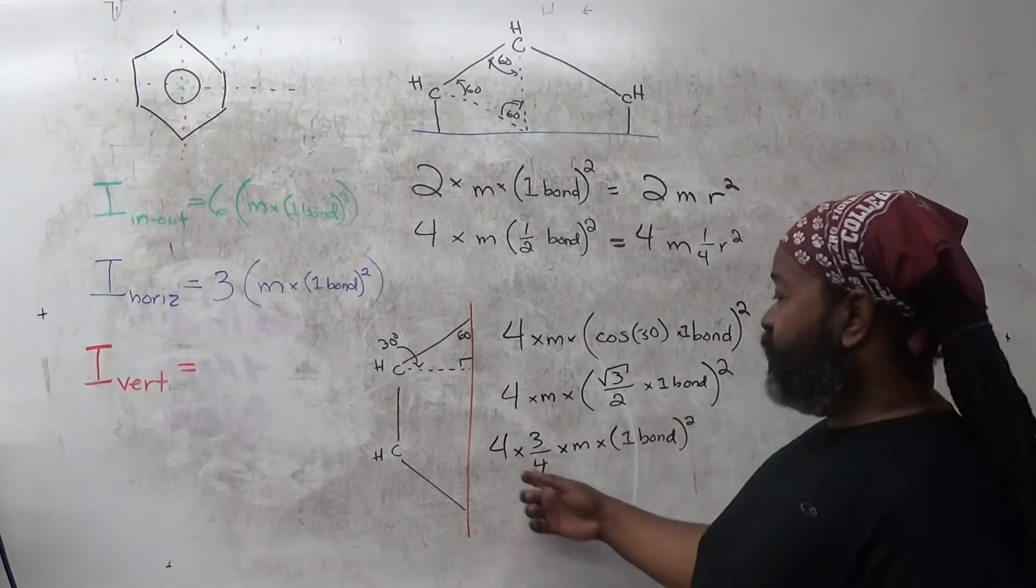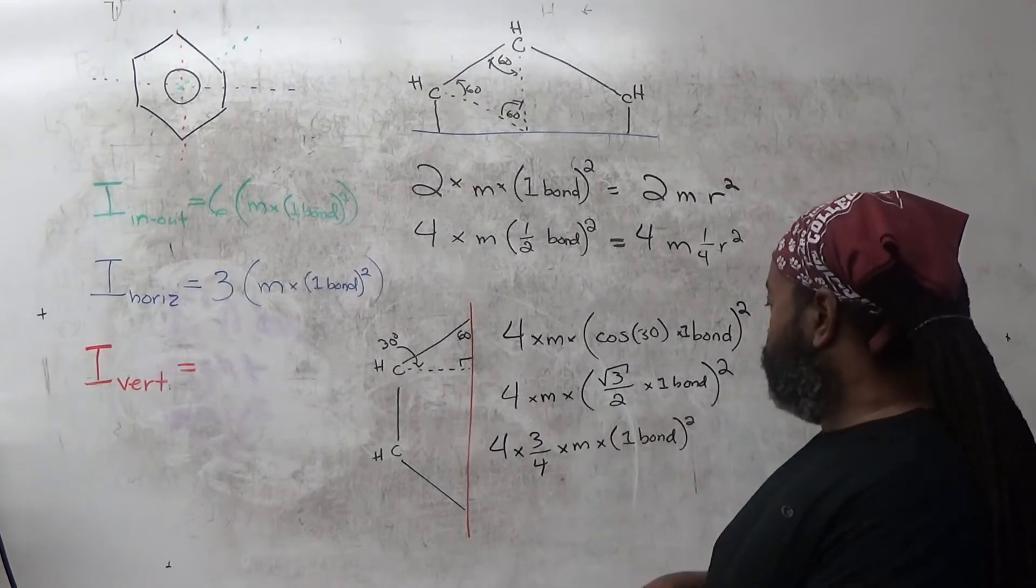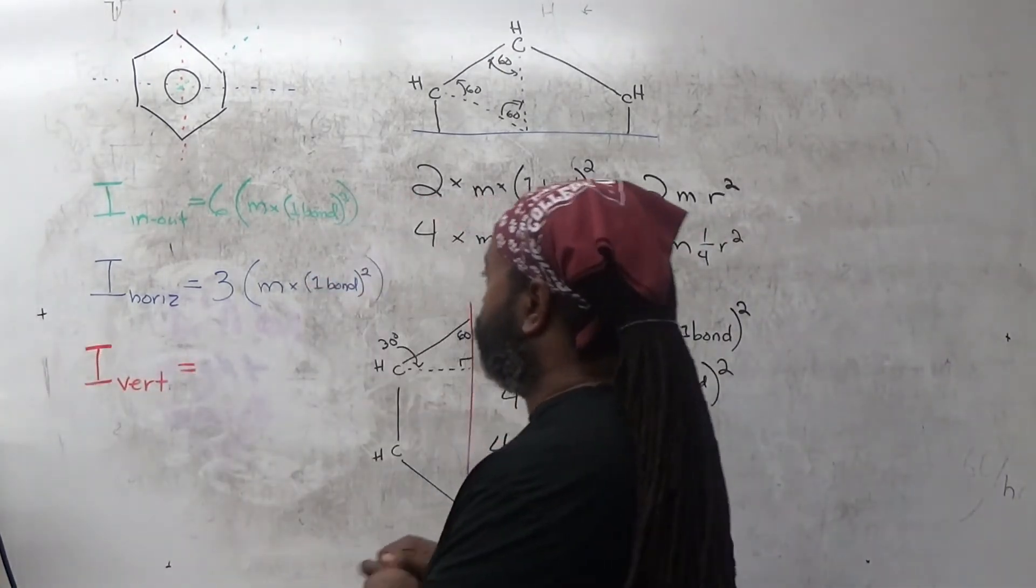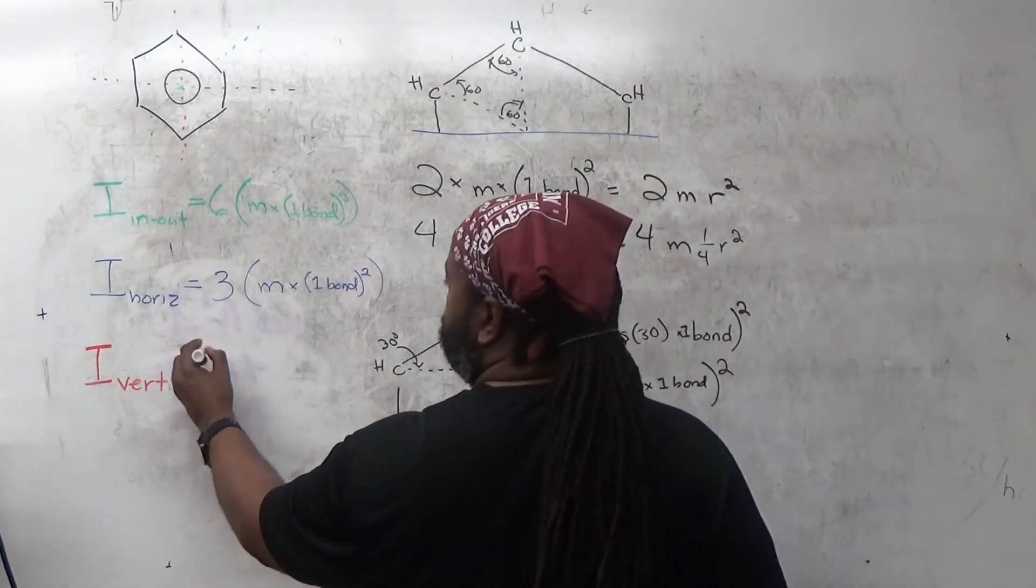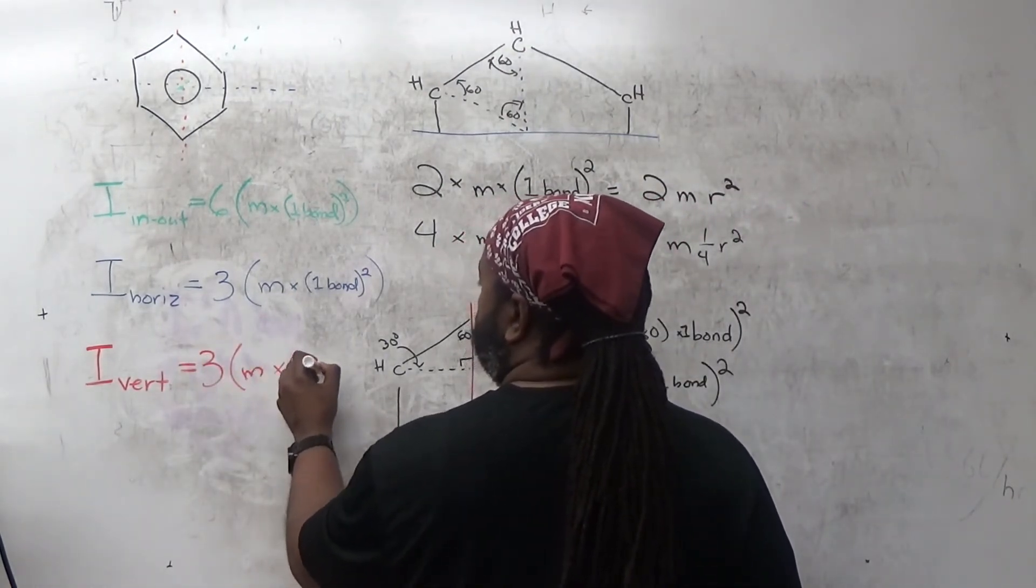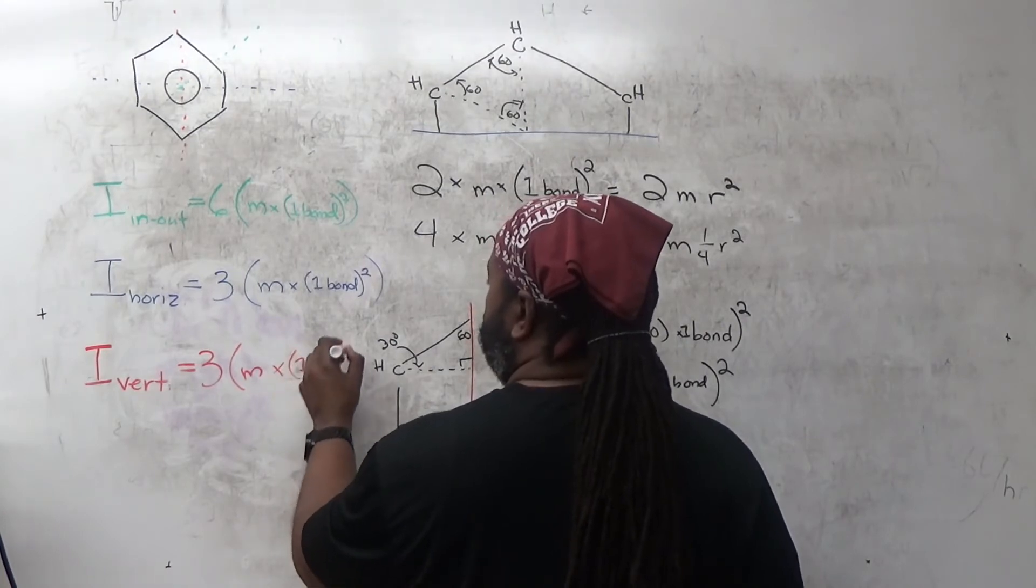So the 4's cancel, and I'm left with 3 times the mass times the bond squared. So let me write that again over here. We have 3 mass and the bond squared.